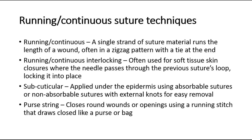The second group of suturing techniques is the running or continuous sutures. Running or continuous suture is a single strand of suture material that runs the length of a wound, often in a zigzag pattern with a tie at the end. Running or continuous interlocking suture is often used for soft tissue skin closures where the needle passes through the previous suture's loop, locking it into place.